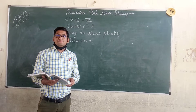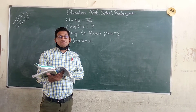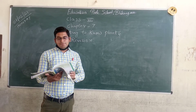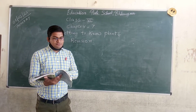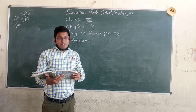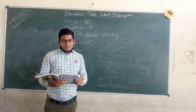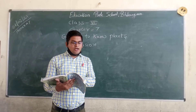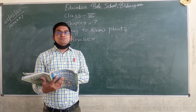We are reading chapter number seven: Getting to Know Plants. We are revising this chapter. Plants on page number 54 — plants with green and tender stem are called herbs.